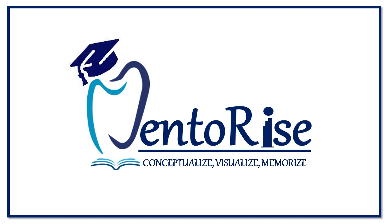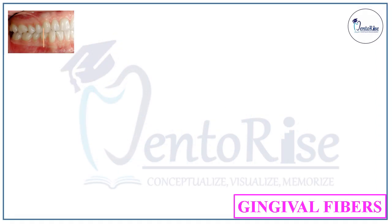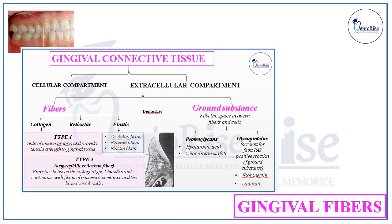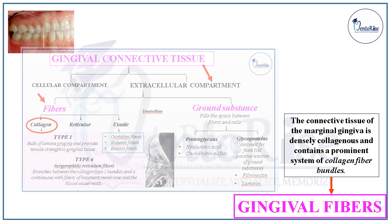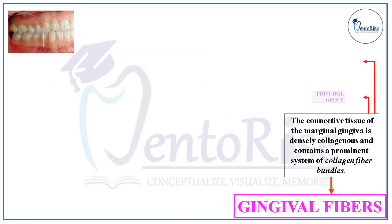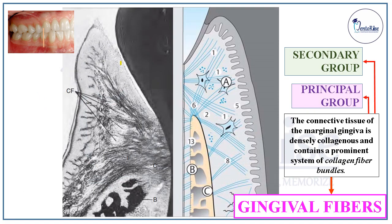We at Denterize welcome you to a platform where we help you to conceptualize, visualize and memorize dentistry. To recall what we covered in our previous video, the gingival connective tissue is composed of the cellular compartment and the extracellular compartment. The extracellular compartment is further composed of the fibers and the ground substance. The fibers are of three types: the collagen fibers, the reticular fibers, and the elastic fibers. The collagen fiber bundles present in the connective tissue of the gingiva form the gingival fibers. To study the gingival fibers in detail, they have been divided into two groups: the principal group and the secondary group.